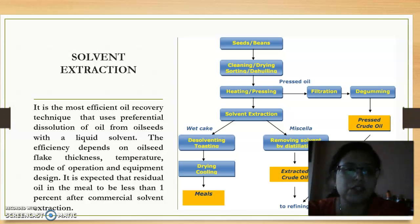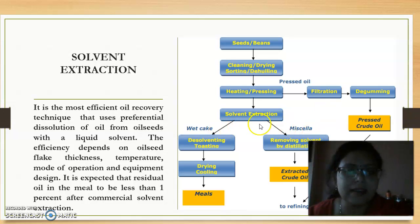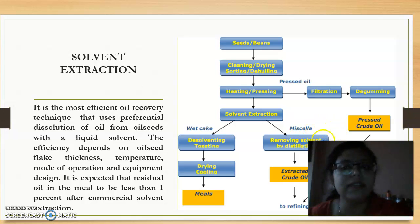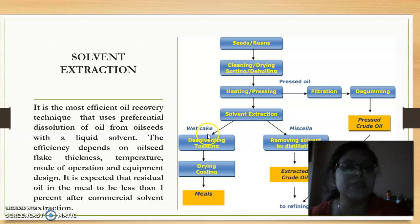Here is a flowchart that shows the solvent extraction process. After the pre-treatments, we get a wet cake and a miscella after the solvent extraction process. A miscella is a combination of about 70–80% solvent and 20% oil. This must be distilled in order to recover the solvent as well as to get the crude oil. The wet cake, which still contains solvent, has to be desolventized, toasted, dried, and cooled so as to use it as animal feed.